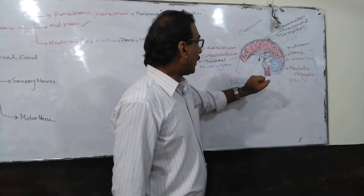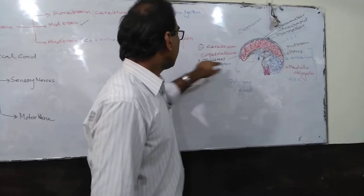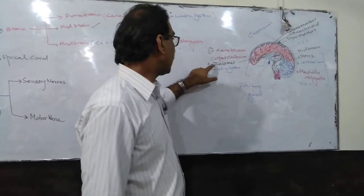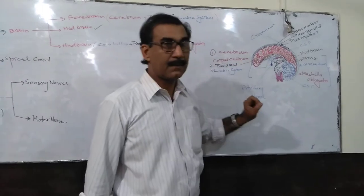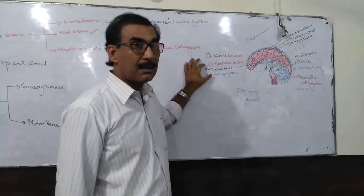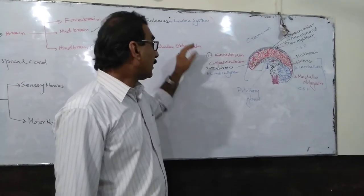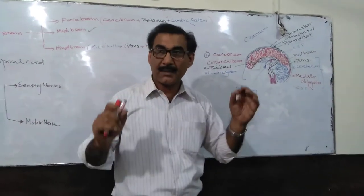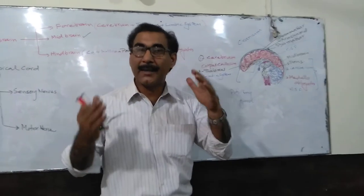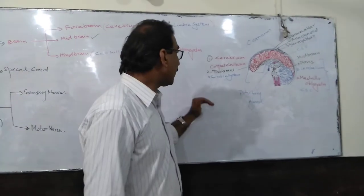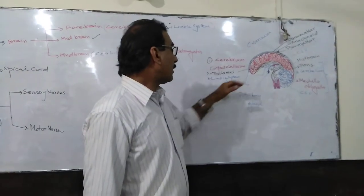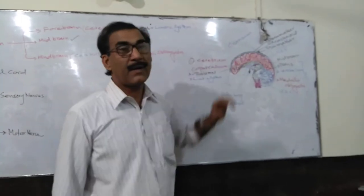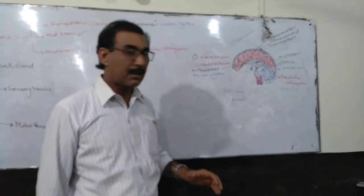The thalamus — the second part of the forebrain — works as a relay station between the autonomic functions and the cerebral functions.